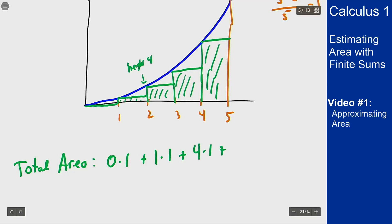So four times one and then we keep going plus nine times one for the height at three and then plus 16 times one for the height at four. This gives me a total area of 30.